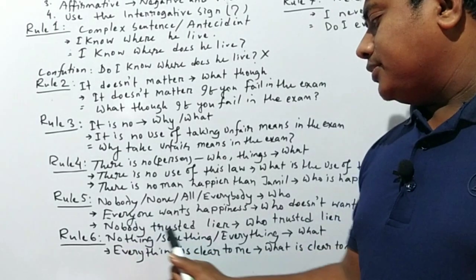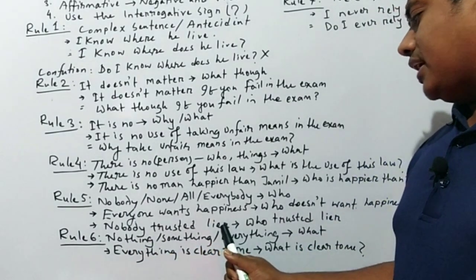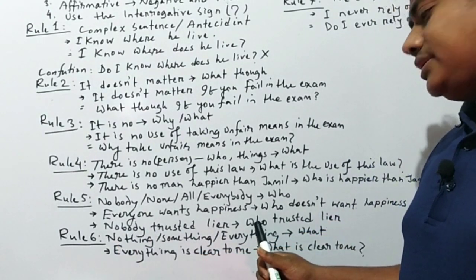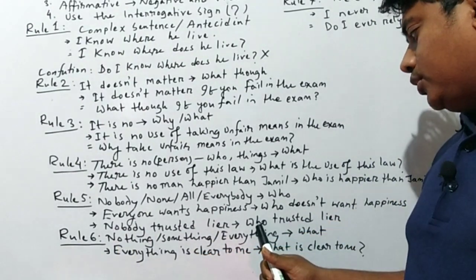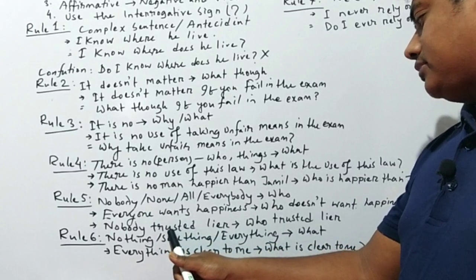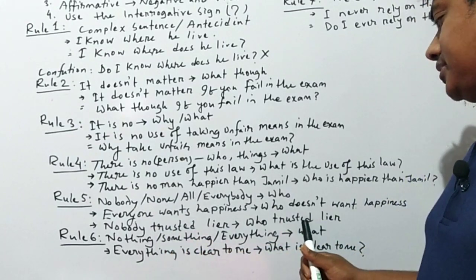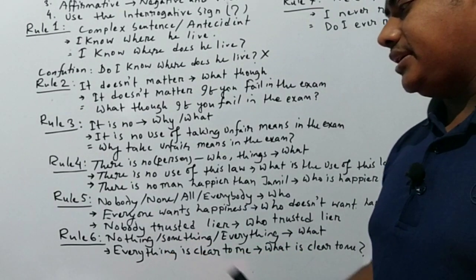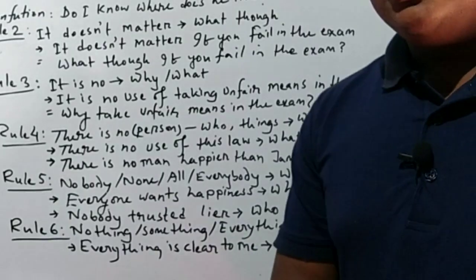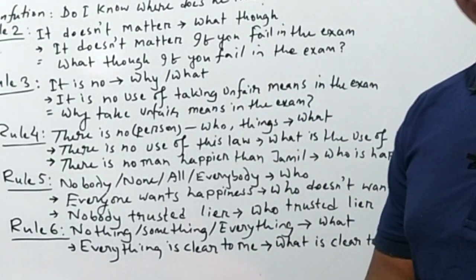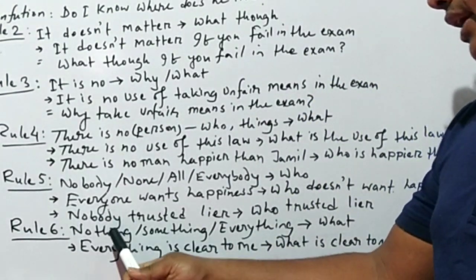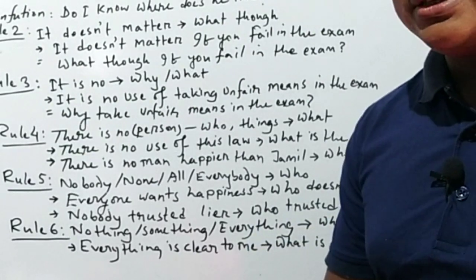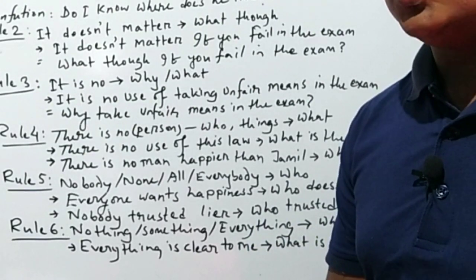Another example: 'Nobody trusted a liar.' Here 'nobody' is negative, so we just take 'who' and keep 'trusted': 'Who trusted a liar?' This is the correct interrogative sentence.